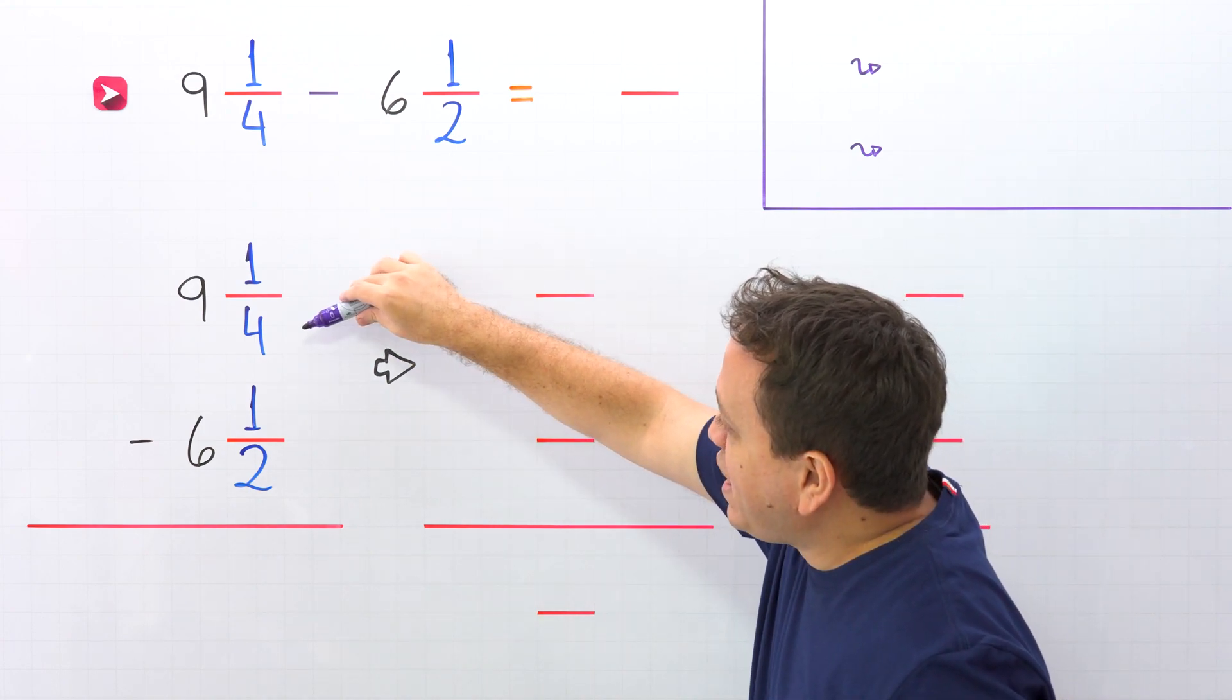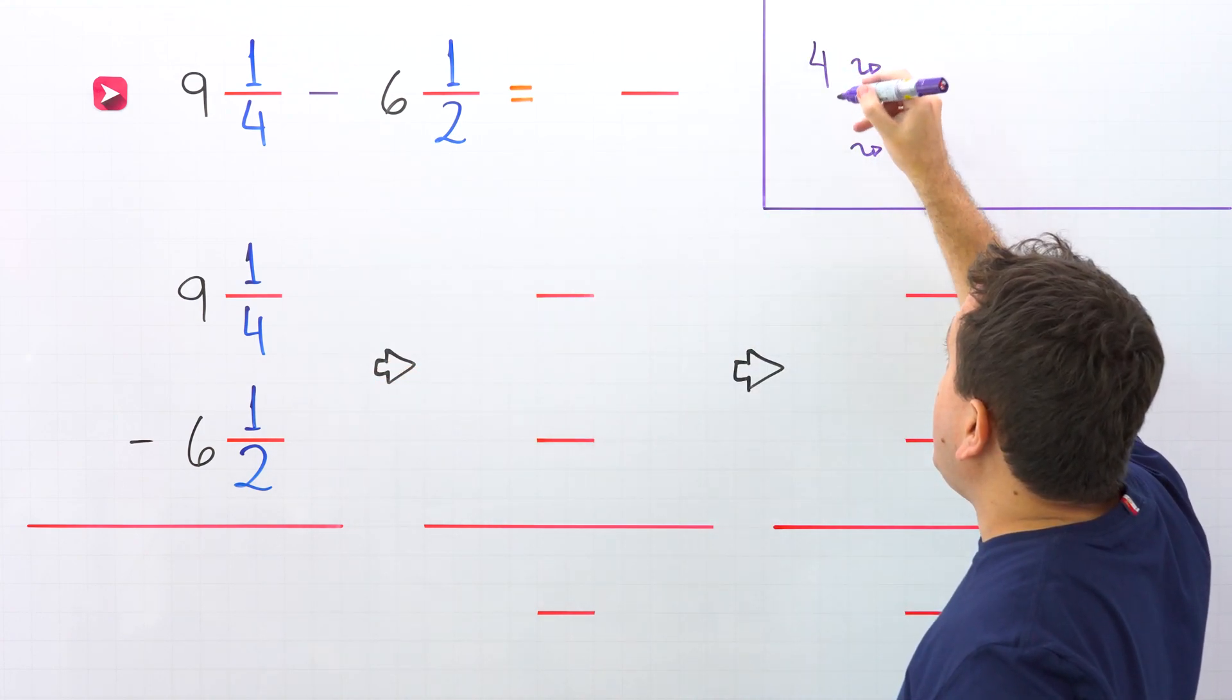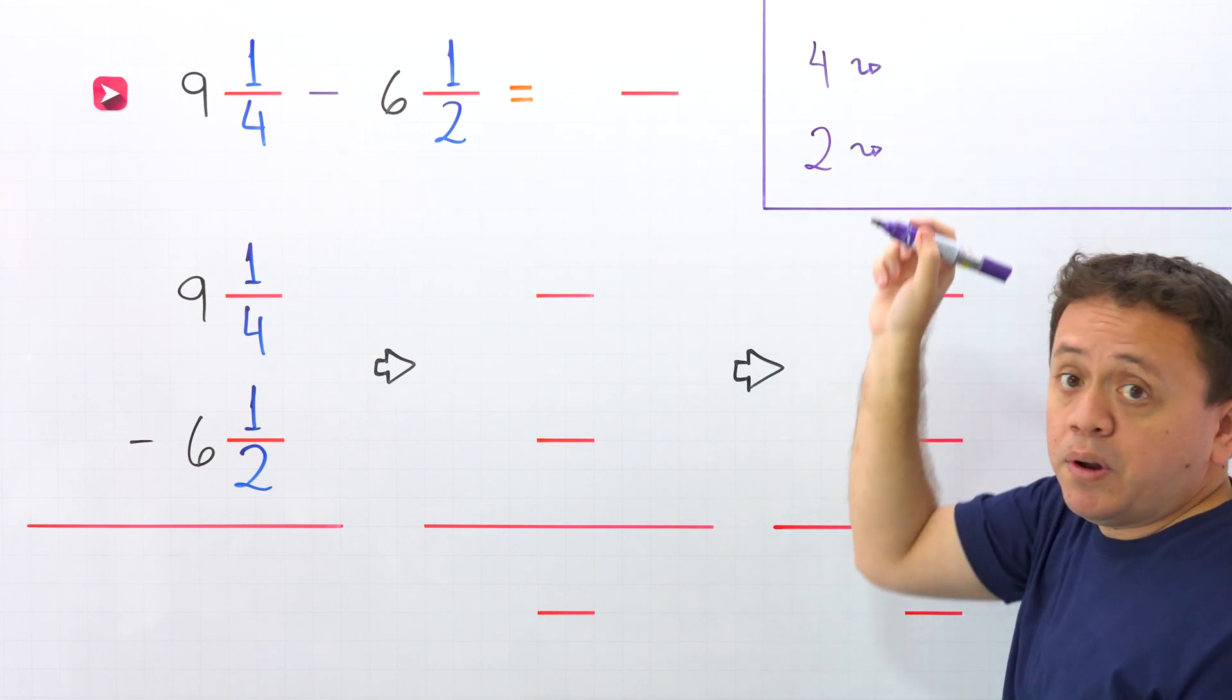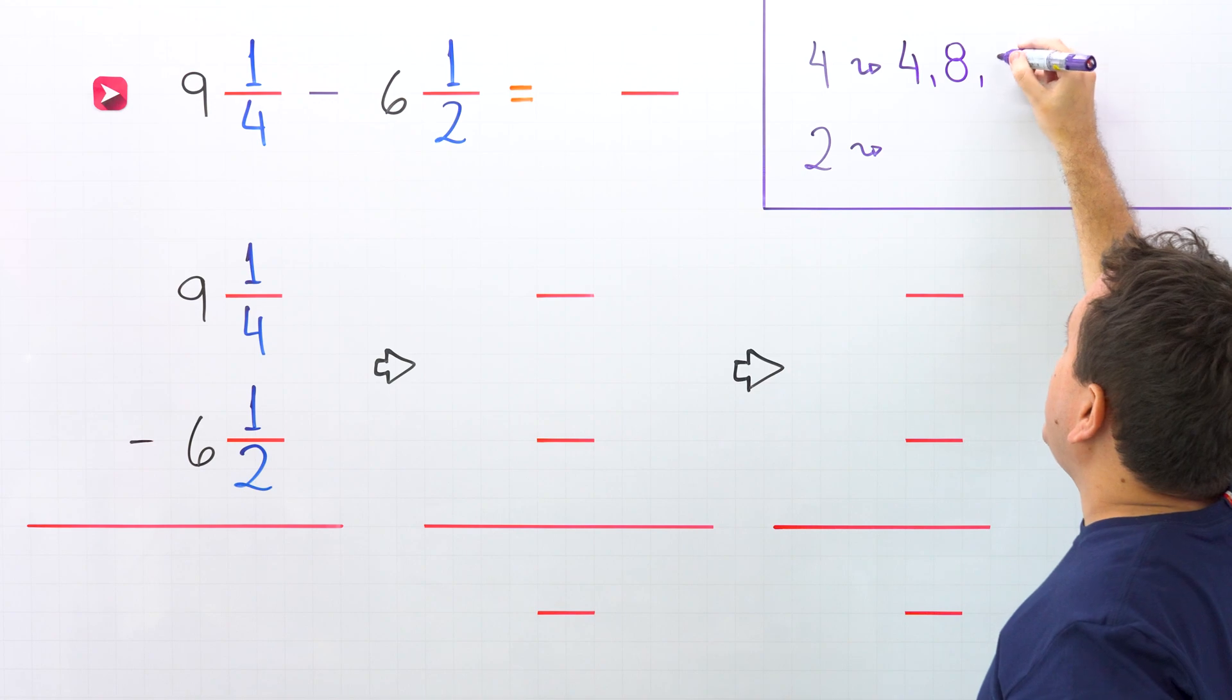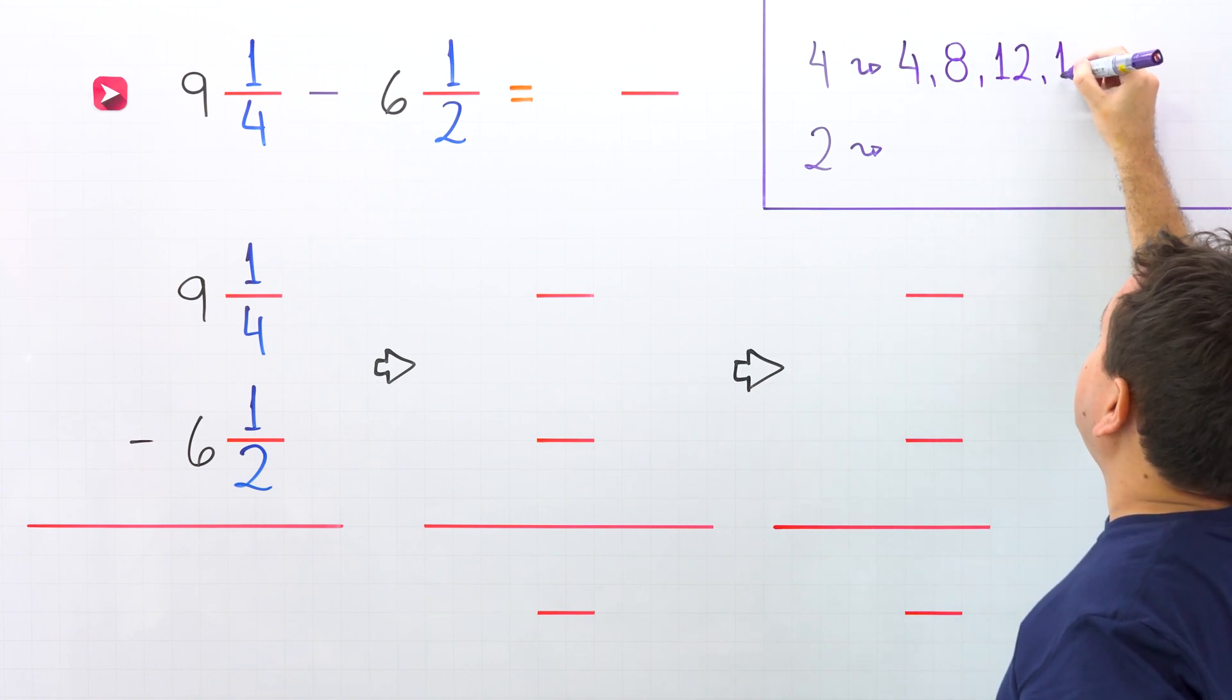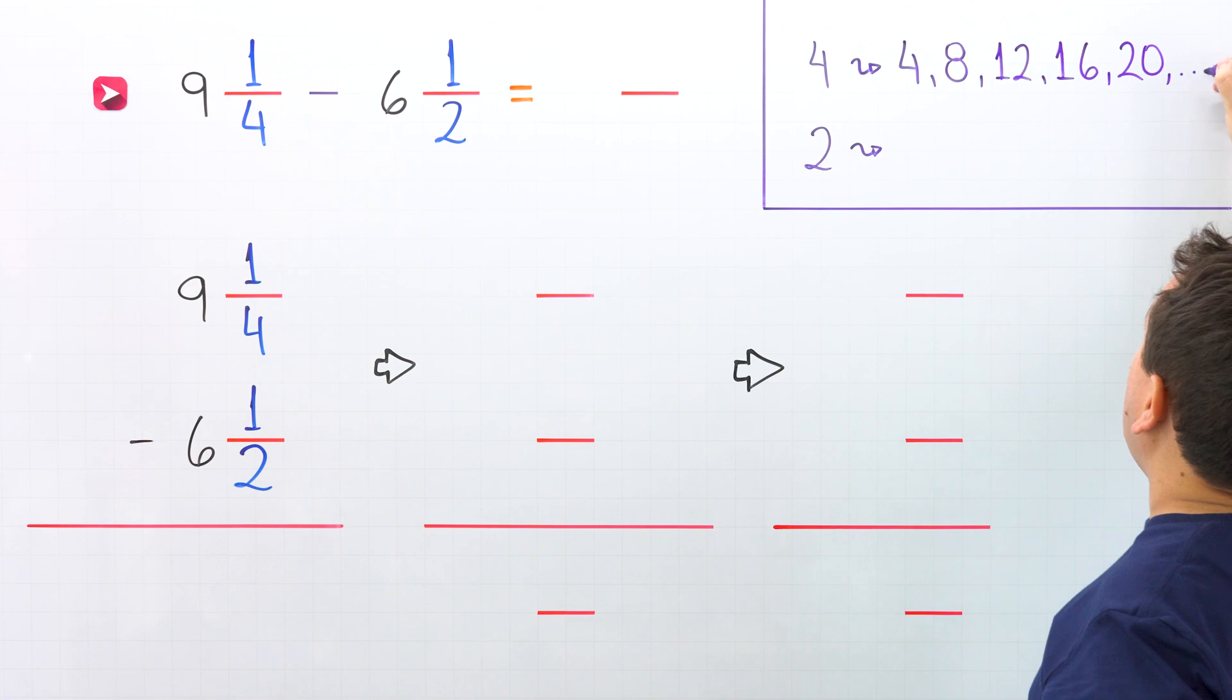The denominators are 4 and 2. Come over here, 4 and 2. The first multiples of 4 are 4, 8, then we have 12, 16, 20, and so on.